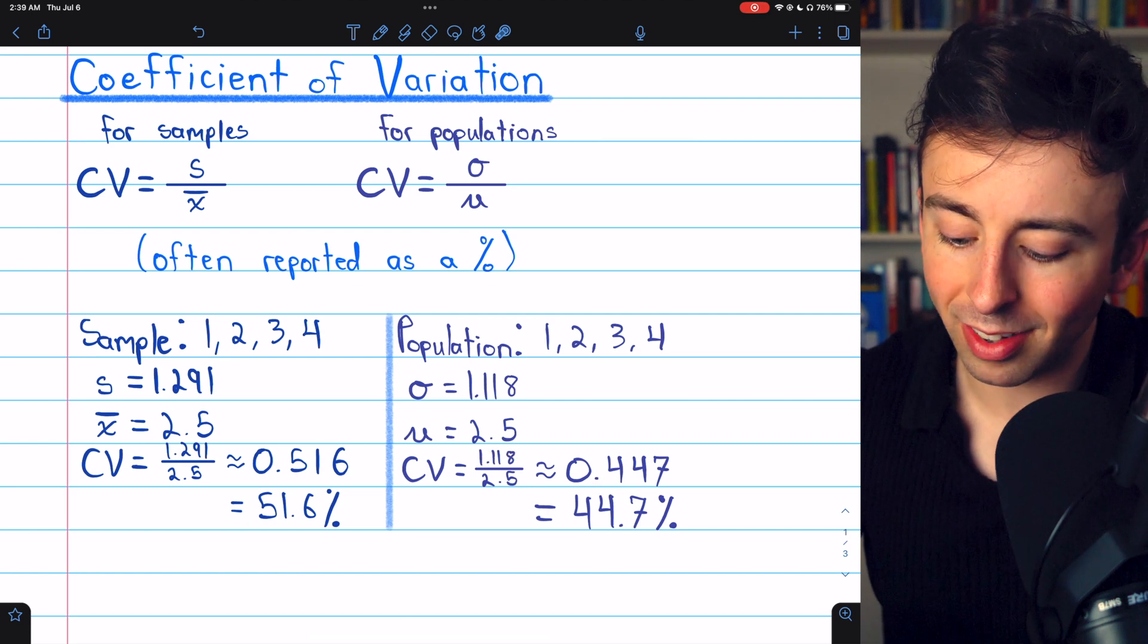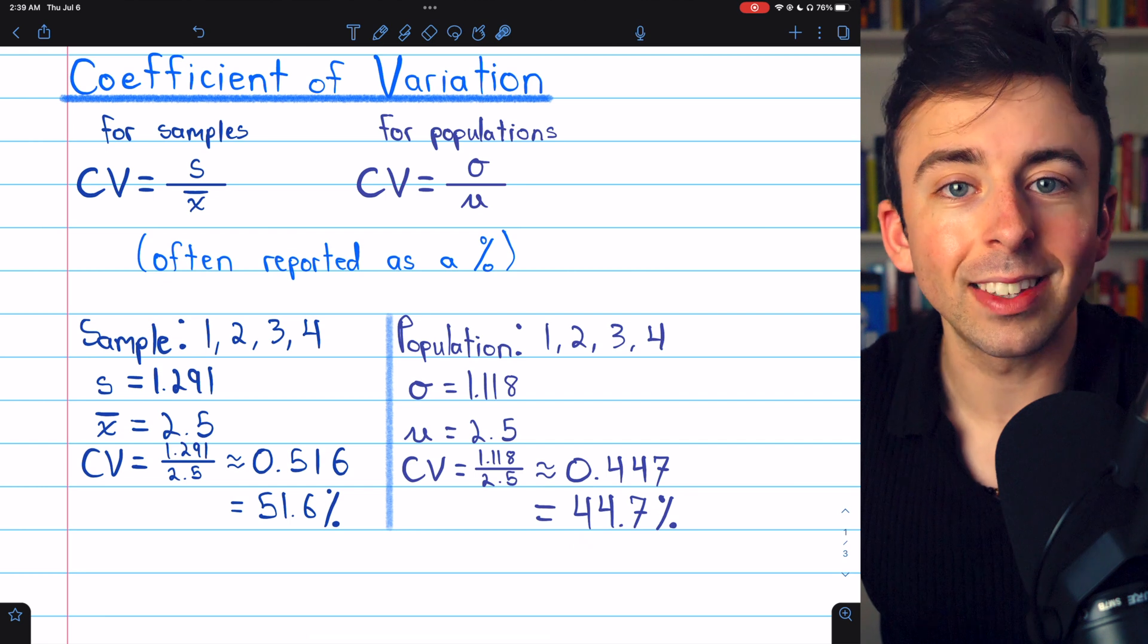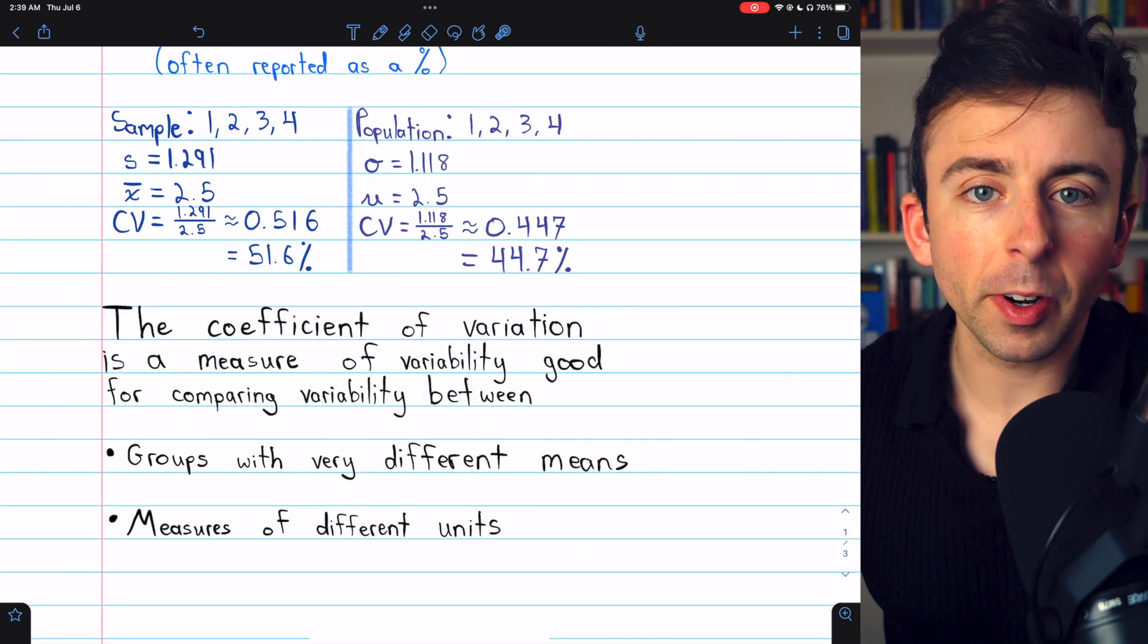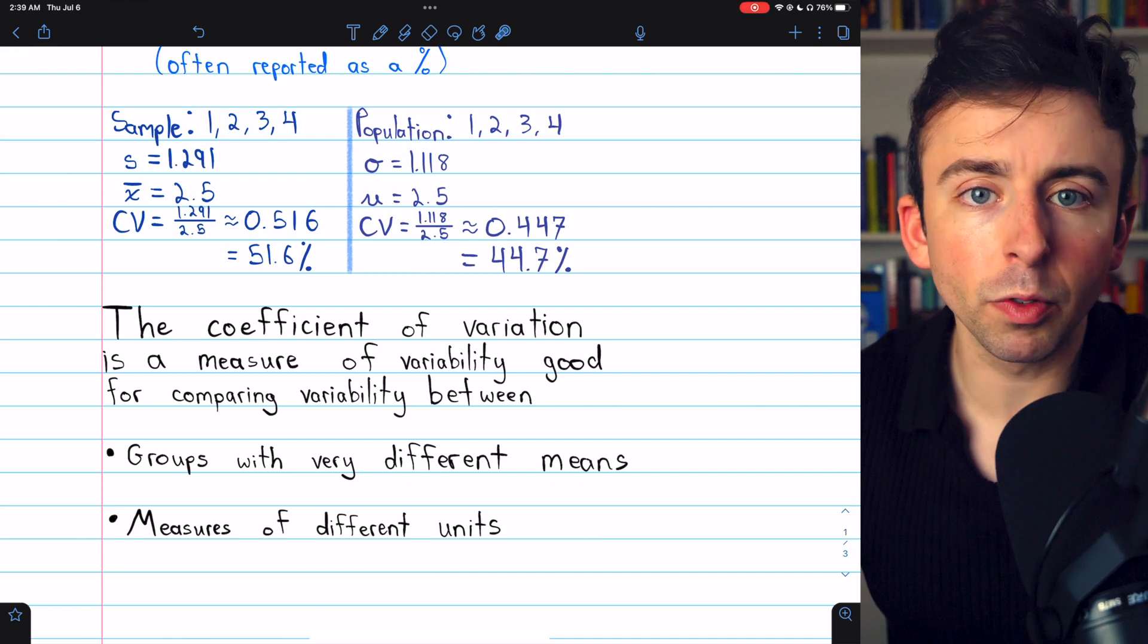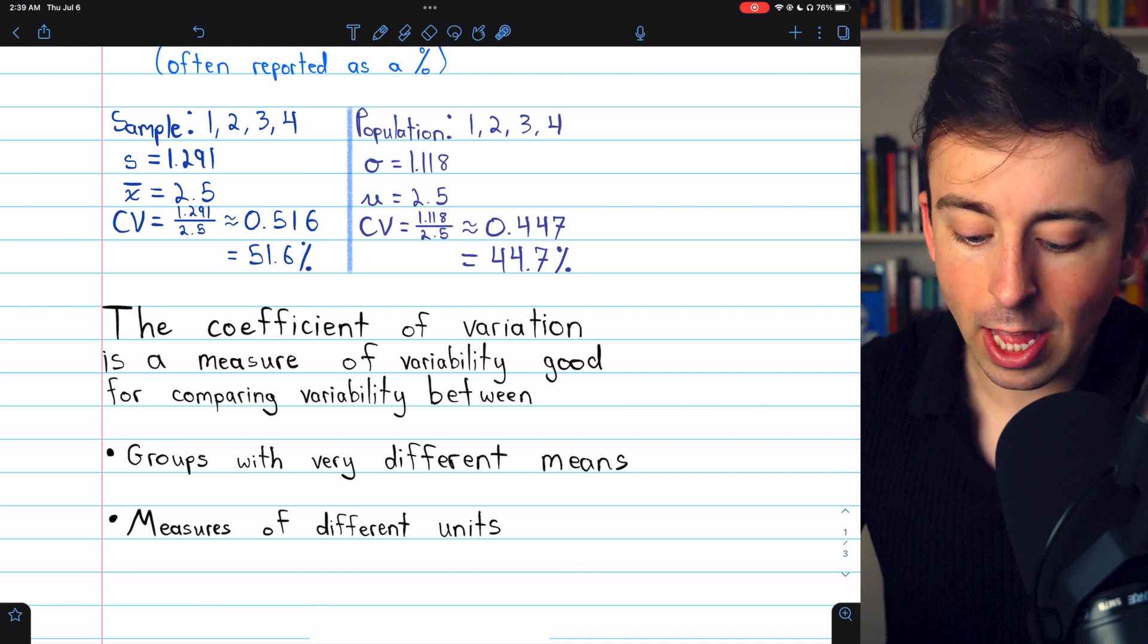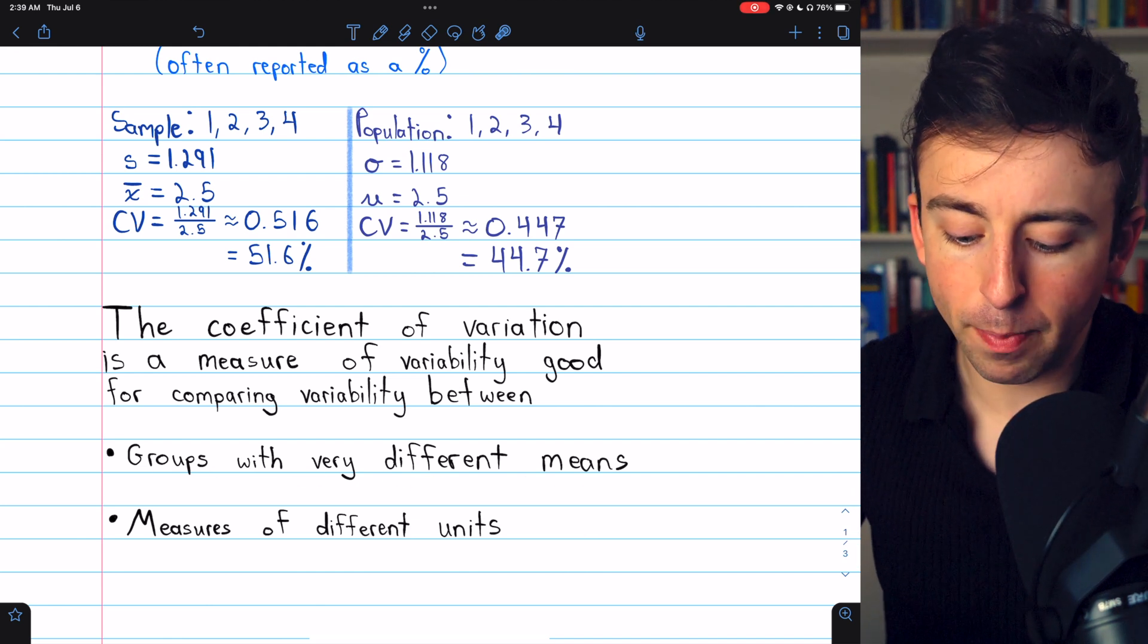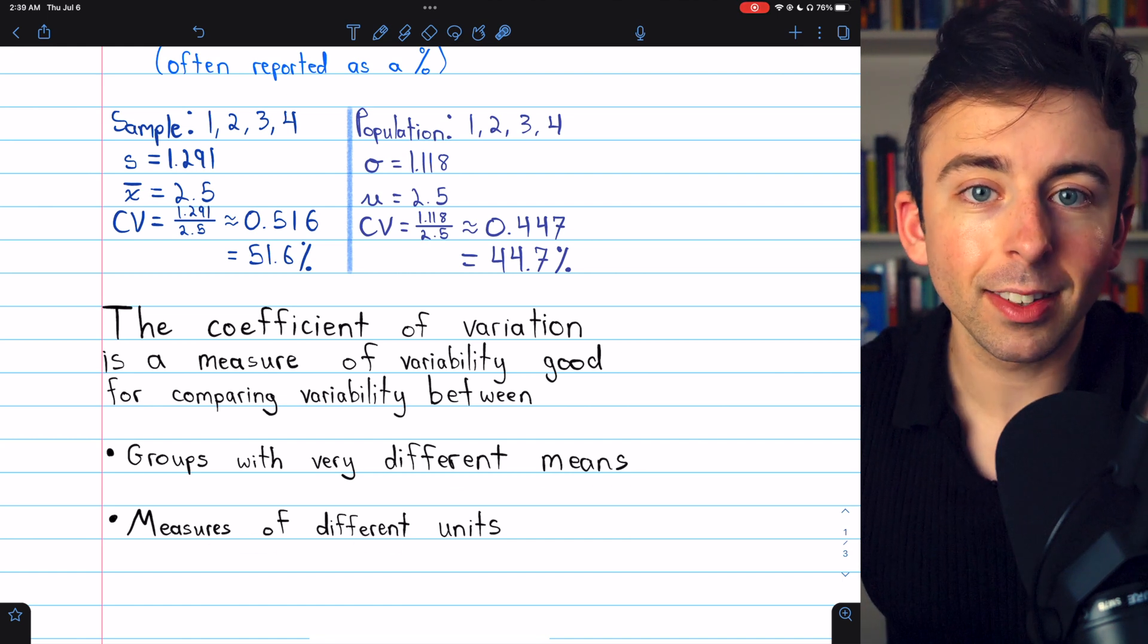which is about 0.447, or 44.7%. The coefficient of variation is a measure of variability that's particularly useful for comparing variability between groups with very different means or measures of different units.